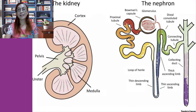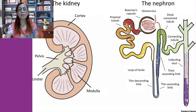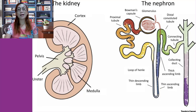Another organ of the urinary system is the nephron — the structural and functional unit of the kidneys. Each kidney contains over a million tiny structures called nephrons, which are responsible for forming urine. One of the main structures of the nephron is the glomerulus, a knot of capillaries. Another main structure is the renal tubule. The closed end of the renal tubule is enlarged and cup-shaped and completely surrounds the glomerulus, and it is called the glomerular capsule. The inner layer of the capsule is made up of highly modified octopus-like cells called podocytes.